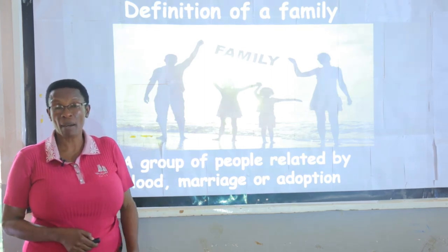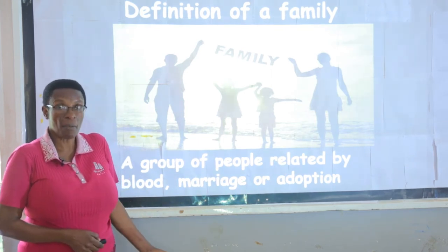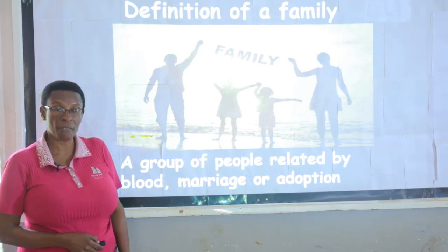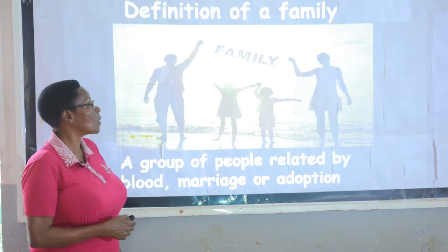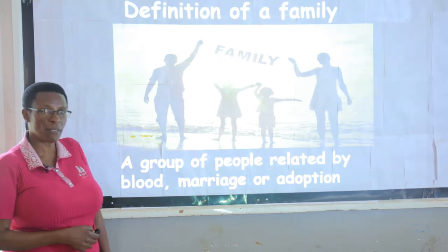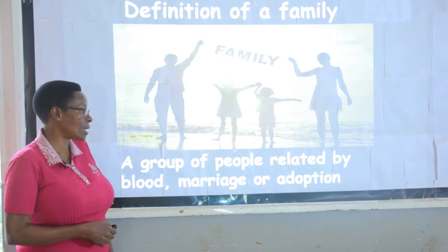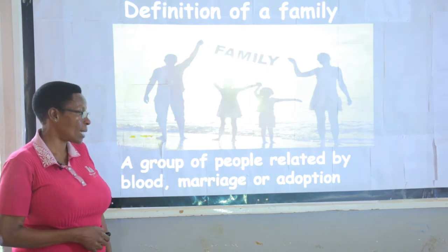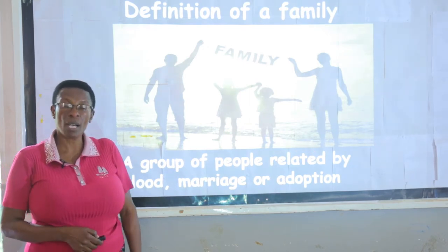When a man marries a woman, they become related — that is husband and wife. So this is a family. A family is a group of people related by blood, marriage, or adoption.